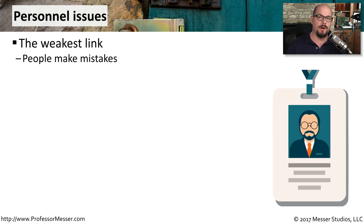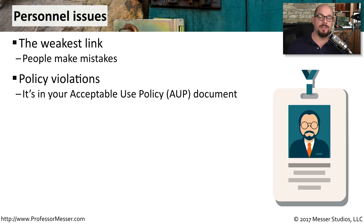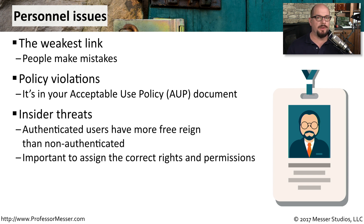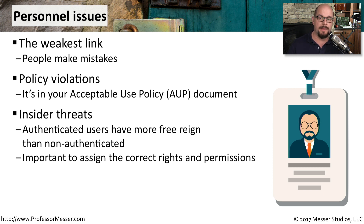When we configure a router, switch, or firewall, we know those devices are going to do exactly what we tell them to do. It doesn't work exactly the same way with the people inside of your organization, because human beings are susceptible to making mistakes. We sometimes see this when somebody violates an acceptable use policy, or AUP — we can find the policy violation and see that somebody transferred some data or visited a website they should not be visiting. Part of the problem is that we've spent a lot of time and money securing the borders of our network, but once you get to the inside, it becomes a lot easier to move around freely. If somebody is an employee, they become an insider threat — they're able to move around the network more freely and are already authenticated with access to a number of internal resources.